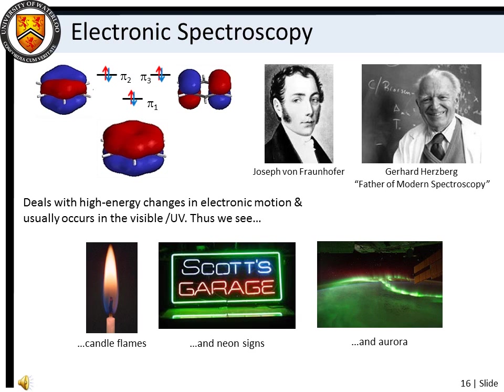Electronic spectroscopy is something you already have experience with. Processes that absorb or emit visible light typically involve electronic transitions. The blue-green color of candle flames, colored emission of neon and sodium vapor lights, and the greens, blues, and purples of the northern lights are all due to electronic transitions in atoms and molecules.